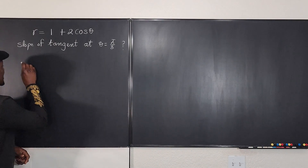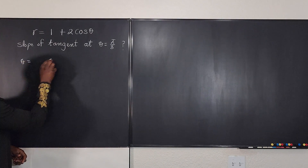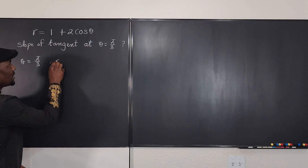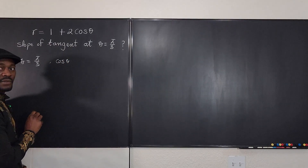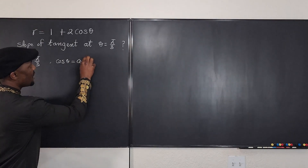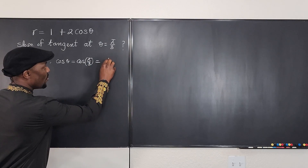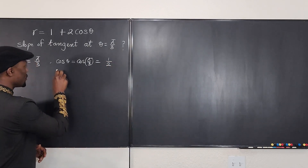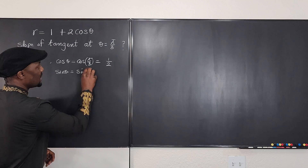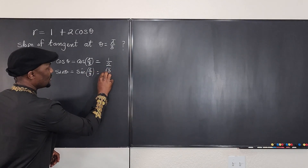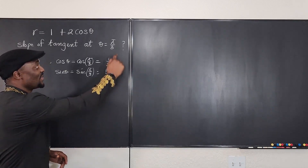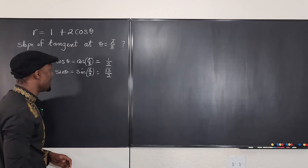The first thing you want to write is that theta is equal to pi over 3. The next thing you want to write immediately after that is the value of cosine theta, which is cosine of pi over 3, and that's one half. We also want to know what sine theta will be at that point, which is sine of pi over 3, which is square root of 3 over 2. Make sure you have these already figured out before you even start, as long as you know what the angle is.